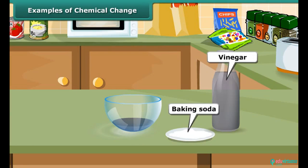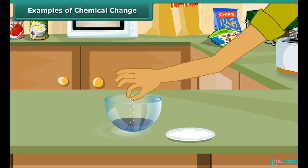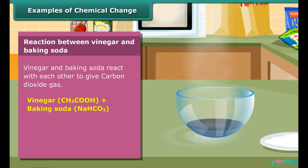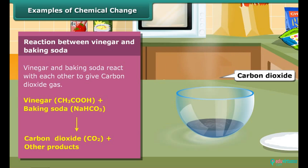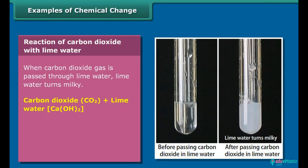Vinegar and baking soda are easily found in our kitchen. Take a little vinegar in a small bowl made of china clay and add a pinch of baking soda to it. You will hear a hissing sound and see bubbles of gas coming out — the evolved gas is carbon dioxide. When this carbon dioxide is passed through lime water, the lime water turns milky.